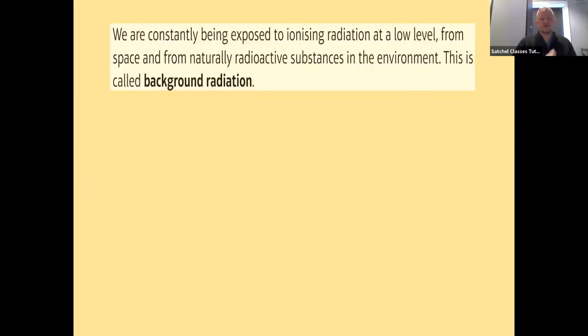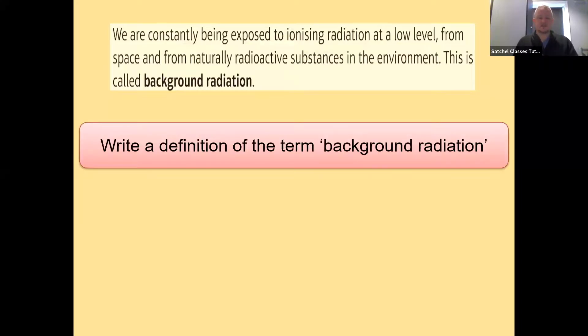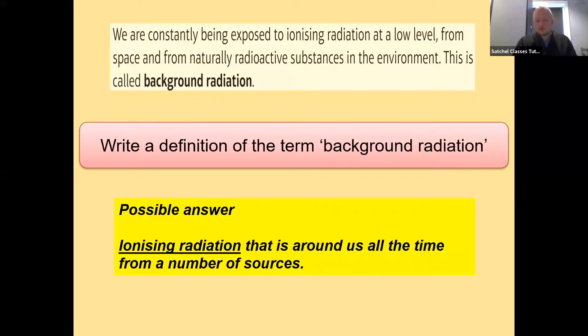We are constantly being exposed to ionizing radiation at a low level from space and from naturally radioactive substances in the environment. This is called background radiation. A common question that gets asked in the GCSE papers: write a definition of the term background radiation. A possible answer is ionizing radiation that is around us all the time from a number of sources.